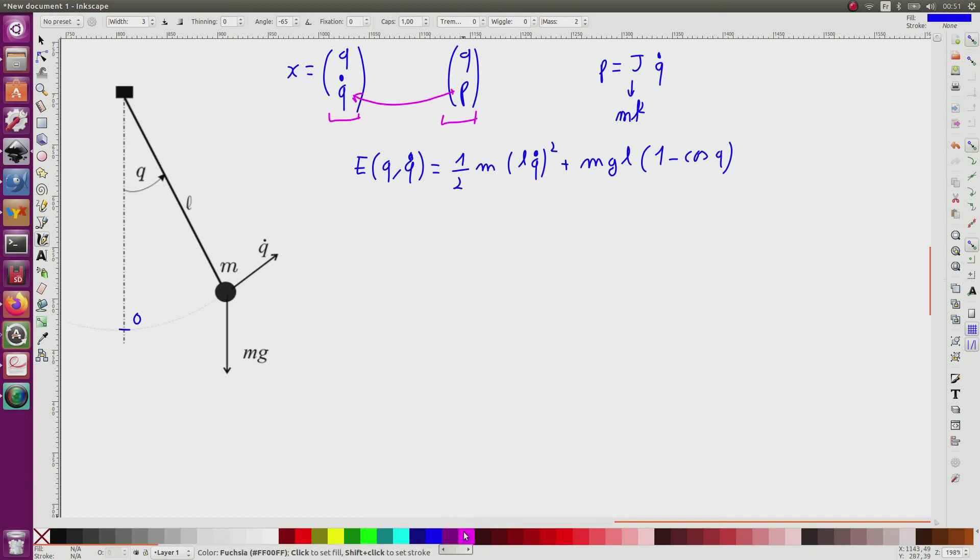Now since I can replace q dot here by p divided by j, which is ml², I will get some simplification. I will obtain here 1 divided by 2, p squared divided by ml², plus mgl times 1 minus cos of q. And this is now a function of p and q, and it is called the Hamiltonian H(p, q).